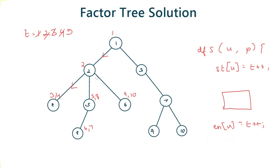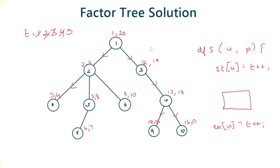Similarly we complete the same process for node 3 and all its children. So we have now calculated the start and end times of all nodes in the tree — a total of 20 time stamps for 10 nodes. Now let's see how we convert this into an array.